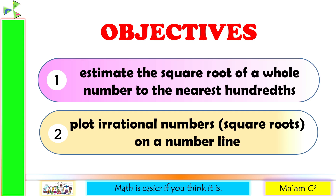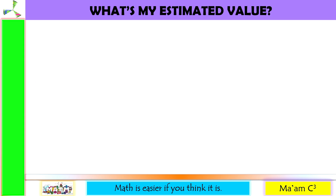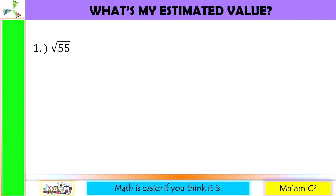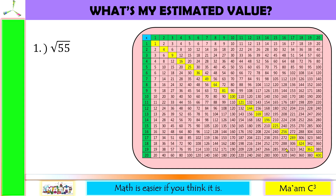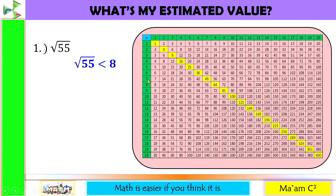Let's have a quick activity on our previous lesson: What's my estimated value? Number 1 is square root of 55. Let us bring out our perfect square table. 55 is somewhere in between 49 and 64. So this means square root of 55 is less than the square root of 64, which is 8, but greater than the square root of 49, which is 7.